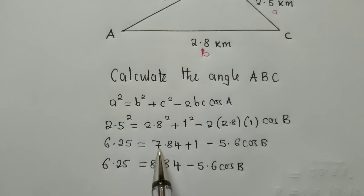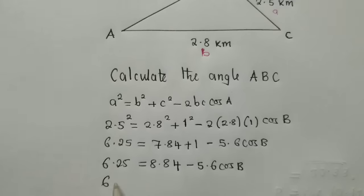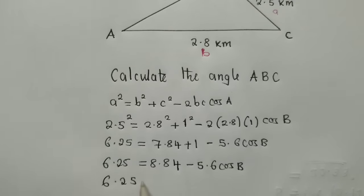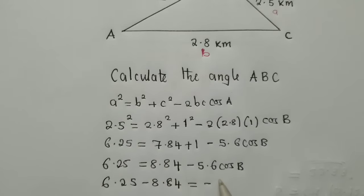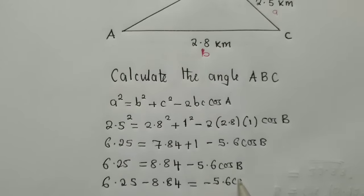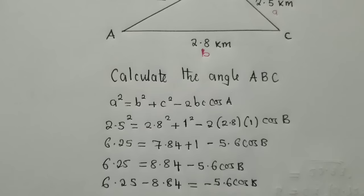So I've just added 7.84 plus 1. We now group the like terms. And when we group the like terms, this is how it will look like. We shall have 6.25 minus 8.84 equal to negative 5.6 cos B.